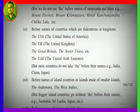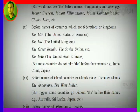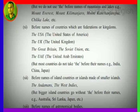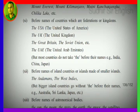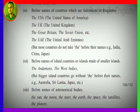Next: before names of countries which are federations or kingdoms, we use 'the'. Examples: the USA (the United States of America), the UK (the United Kingdom), the Great Britain, the Soviet Union, the UAE (United Arab Emirates). But most countries do not take 'the' before their names — for example: India, China, Japan.